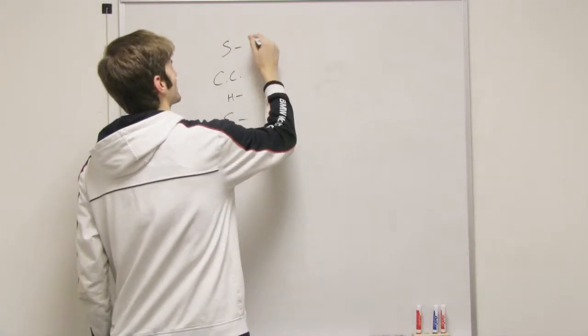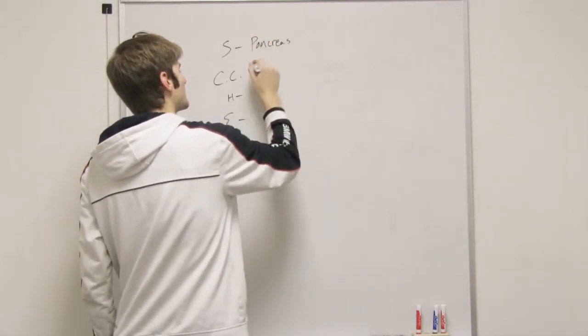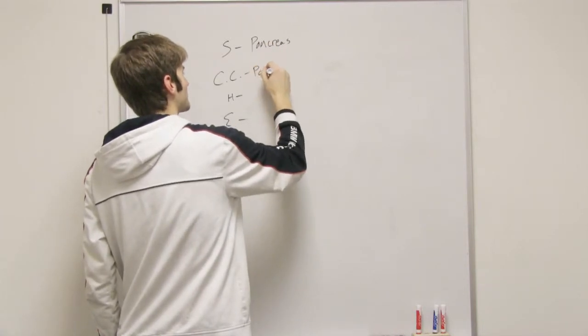So the sensor when it comes to blood sugar is the pancreas. The pancreas is always checking on the blood sugar. The control center is also the pancreas.